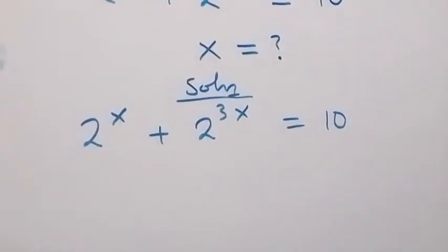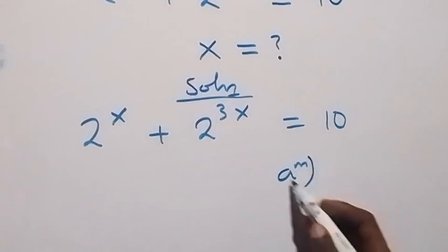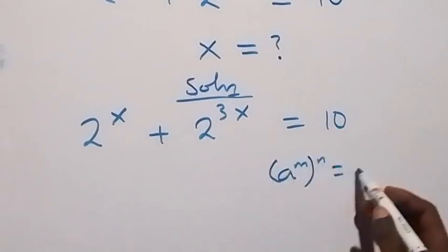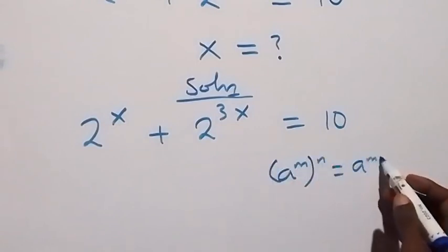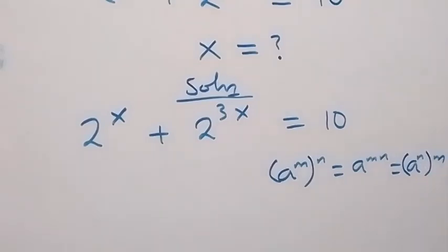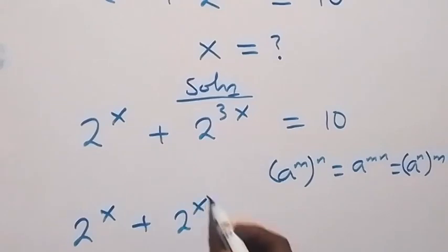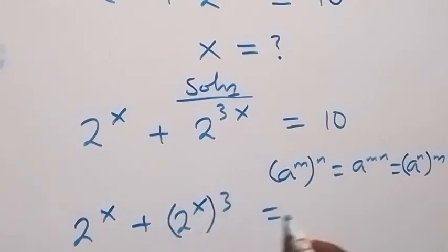From here, when we have a raised to power n raised to power n, this is the same thing as a raised to power n, which we can also write as a raised to power n then raised to power n. So it implies that we can write this as 2 raised to power x plus 2 raised to power x, then raised to power 3, which equals to 10.